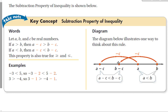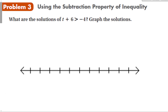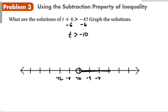How do you know when to use addition and when to use subtraction? The addition property is used when a number is being subtracted from the variable, and subtraction is used when you're adding — because we always use inverse operations. I see addition here, so I'm going to subtract 6 from both sides using the subtraction property of inequality. So we have t is greater than negative 10. I put an open circle there because it doesn't say or equal to, and I go to the right.